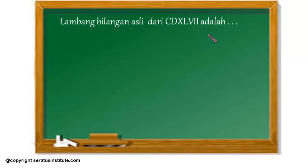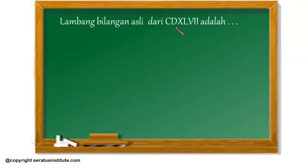Nah di sini Sobat 100 perlu perhatikan penulisannya. Tadi sudah disebutkan kalau C adalah 100, D-nya 500. Karena nilai D itu lebih besar dibandingkan C, maka di sini kita kurangkan. Kemudian X dengan L juga demikian ya Sobat 100 — L-nya lebih besar dibandingkan X, maka ini juga kita kurangkan: 50 dikurangi 10. Yang tadi dikurangi 500 dikurangi 100. Sedangkan yang VII, V-nya lebih besar dibandingkan I, maka berlaku sifat penjumlahan.